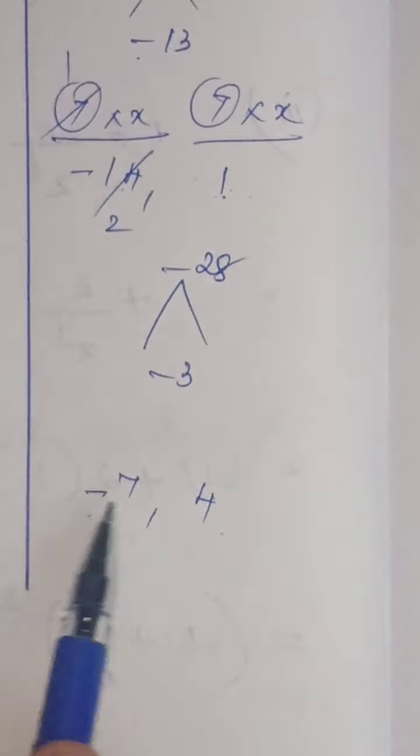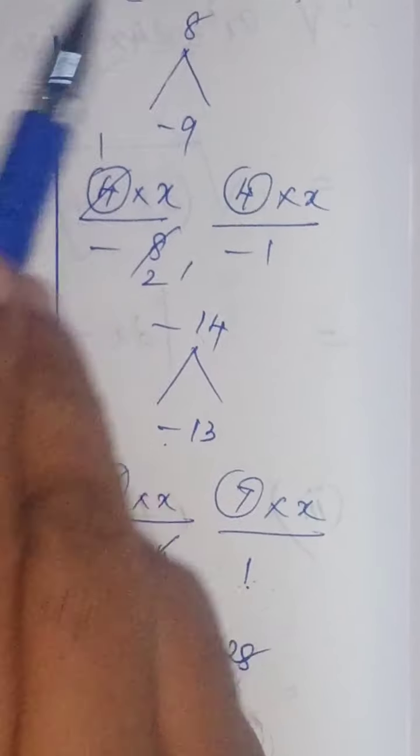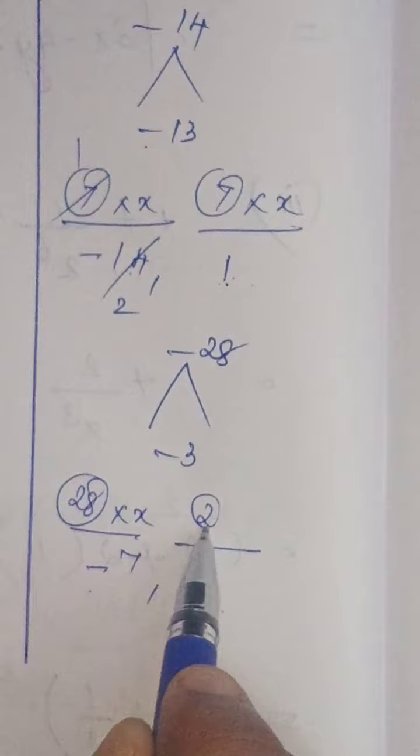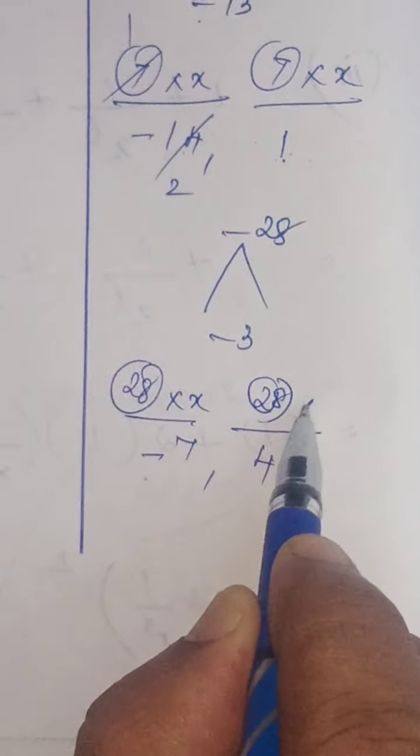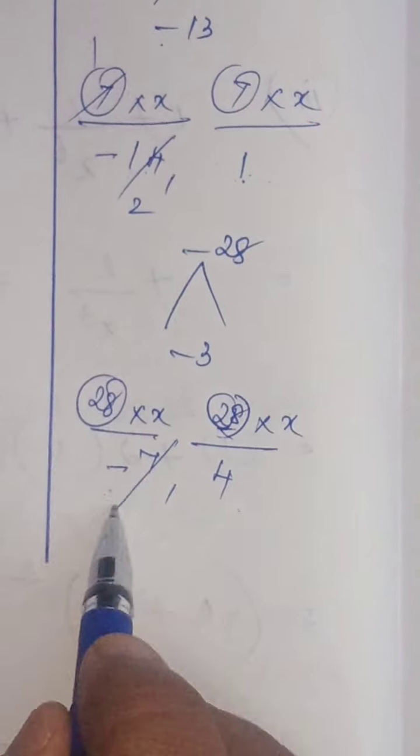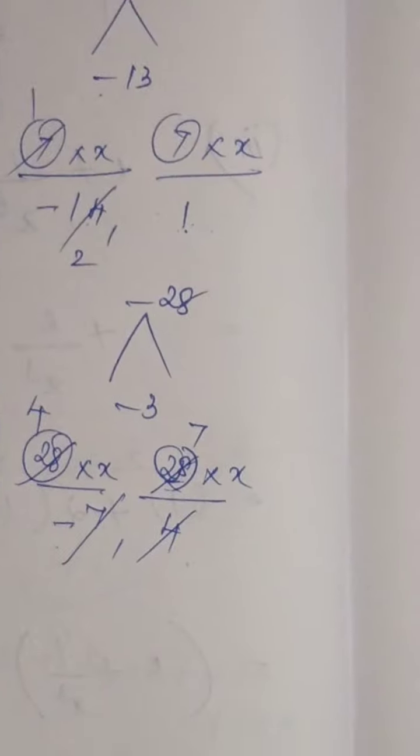You can verify. Minus 7 plus 4 that is equal to minus 3. Minus into plus minus 7, 4s are 28. Coefficient of x squared equals 28. Write 28 in numerator into x, numerator into x.